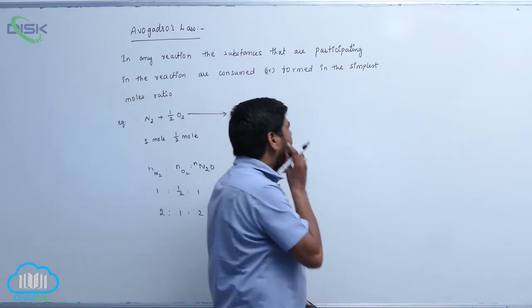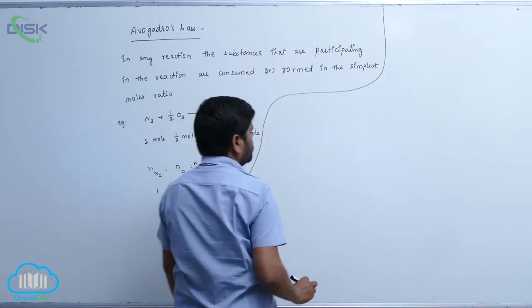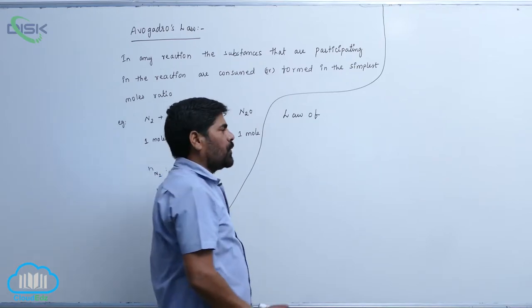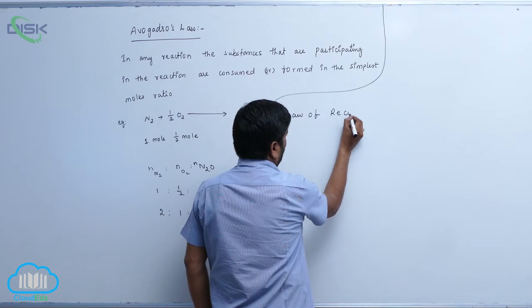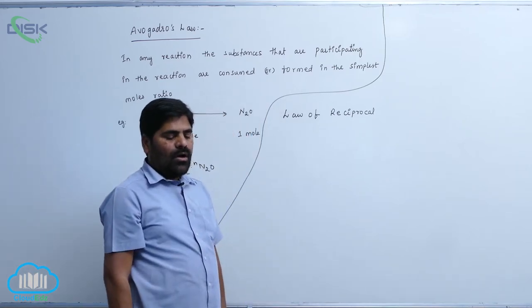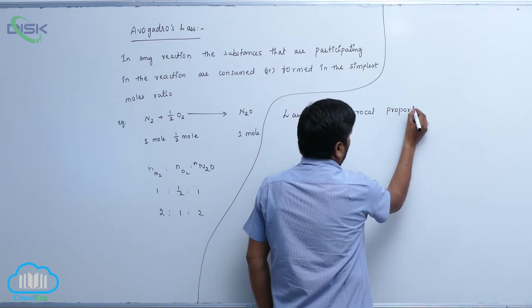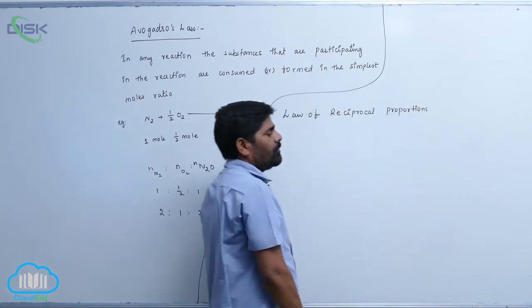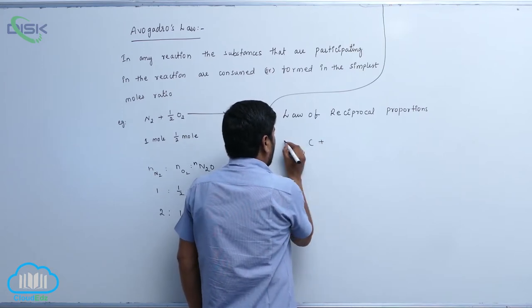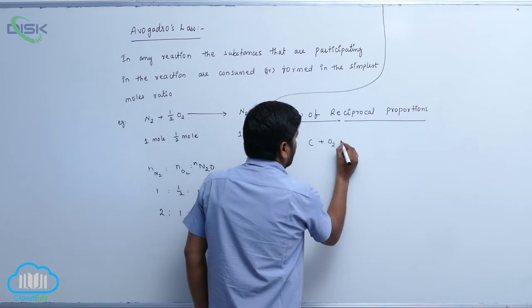The second law is the law of reciprocal proportions. For example, carbon combined with oxygen to form carbon dioxide.